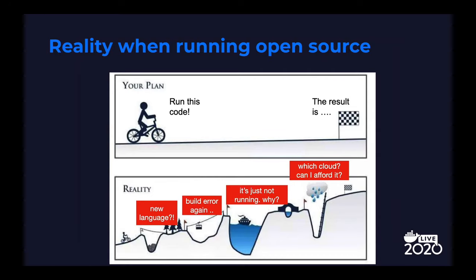In summary, every developer wants to run code right away, but there are several hurdles to overcome. First, if you are not familiar with the language, you may want to skip. Second, if the build fails, you need to do something to fix it. Third, even after a successful build, it may not run for various reasons — the runtime environment is simply not the same as the one who shared the code. Lastly, if I want to bring up a service on the cloud, I need to worry about where to deploy and how I can afford the server cost.